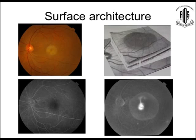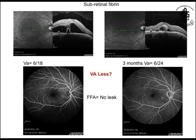The OCT also helps delineate surface architecture nicely. In another case, vision was 6/18. At three months vision decreased to 6/24. The angiogram at that time showed no leak. But on OCT, the reason became clear: subretinal fibrin was present — though the central macular thickness was less, the fibrin alone caused the vision decrease.